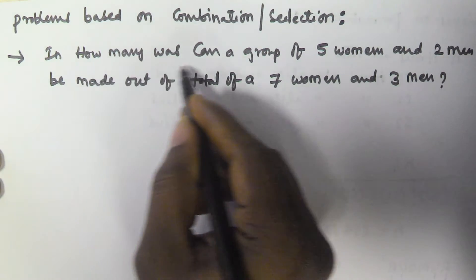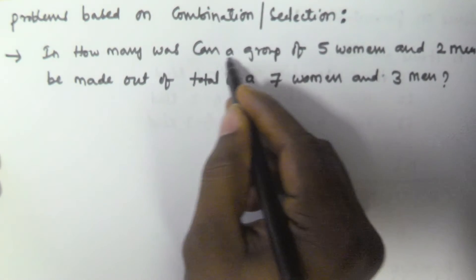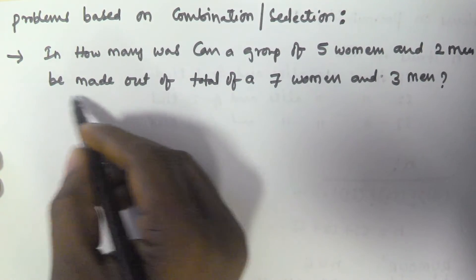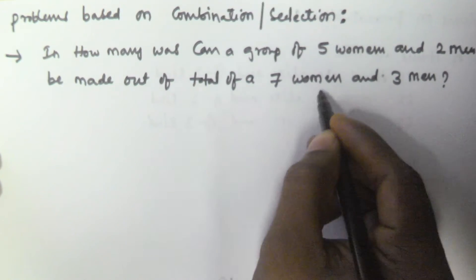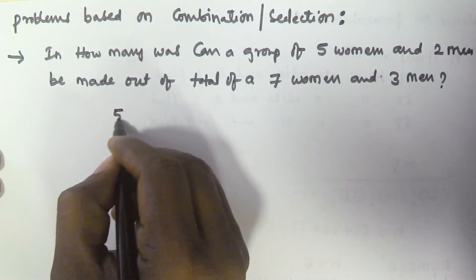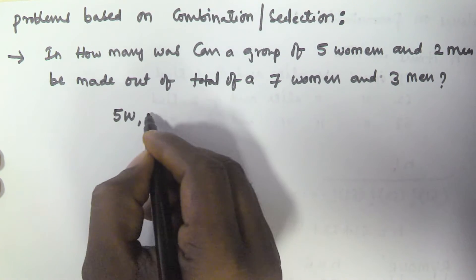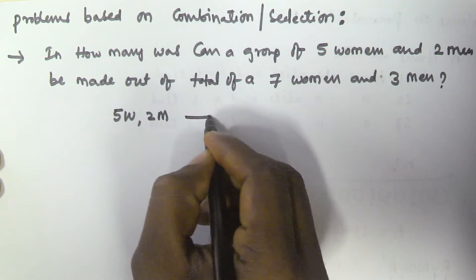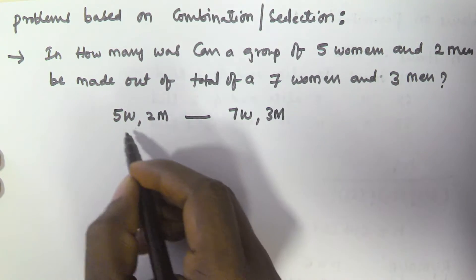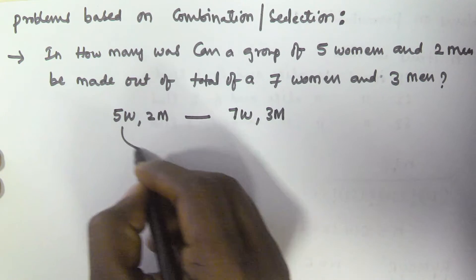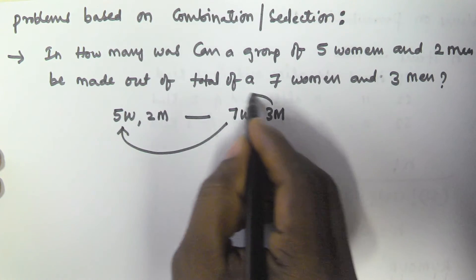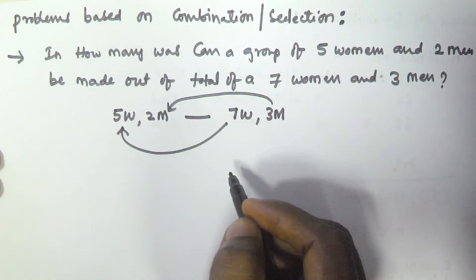So the question is: in how many ways can a group of 5 women and 2 men be made out of a total of 7 women and 3 men? That means we have to select 5 women from 7 women and we have to select 2 men from 3 men.